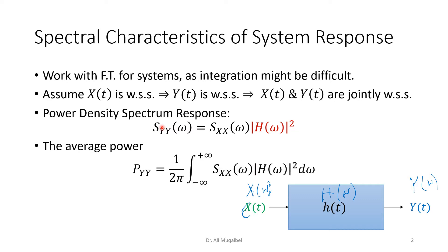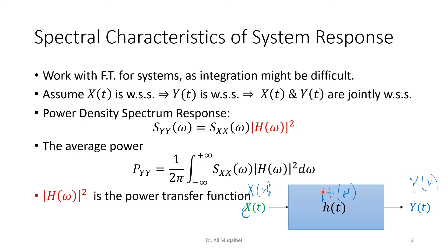We can find the average power at the output by integrating the power spectral density of Y, or equivalently replacing it in terms of the input signal — there is a factor of 1 over 2π because of the use of omega. We call H(ω) the transfer function and |H(ω)|² the power transfer function. So we have the transfer function and now we also have the power transfer function.